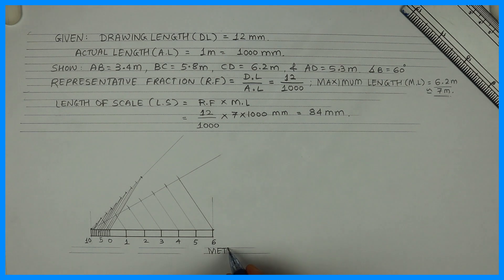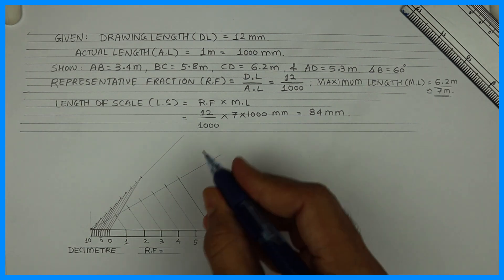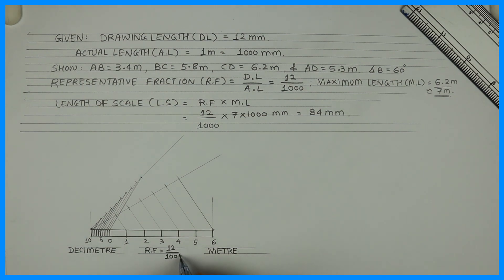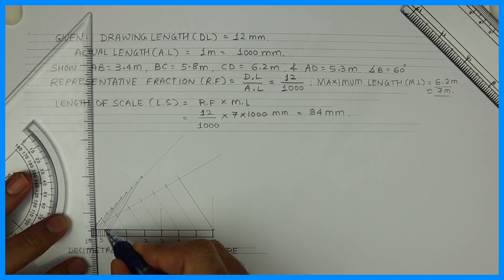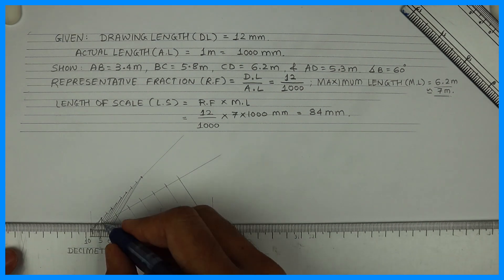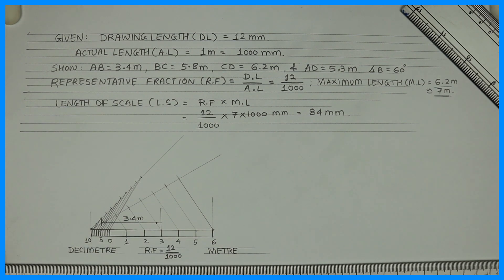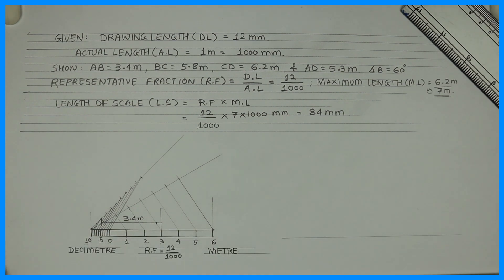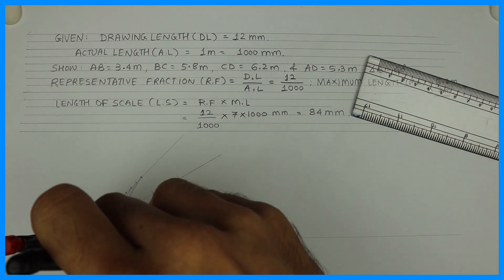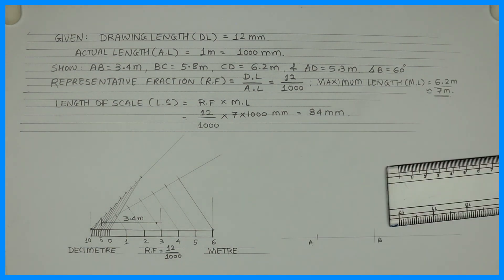We will write 'meter' here, 'decimeter' here, and RF. RF is 12 upon 1000. Now we need to mark all the dimensions. First we will mark 3.4 — taking 4 from the decimeter side and 3 from the meter side, giving us 3.4 meters. I need to draw AB = 3.4, so I will take 3.4 from the scale I have marked and put it on the drawing. So I got AB.